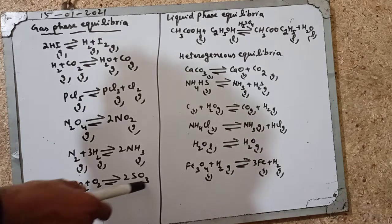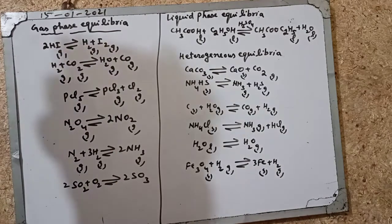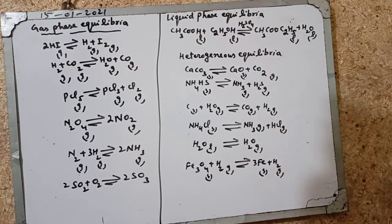SO2 and O2 combine to give SO3: 2SO2 plus O2 gives 2SO3. Liquid phase equilibria: acetic acid when treated with C2H5OH ethyl alcohol.